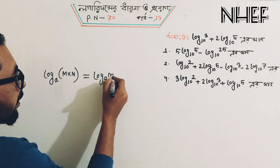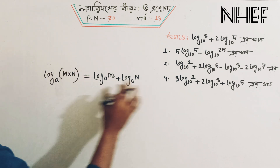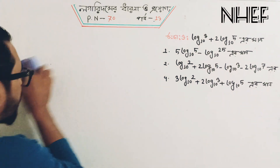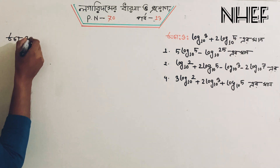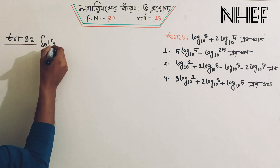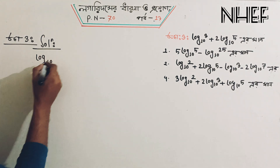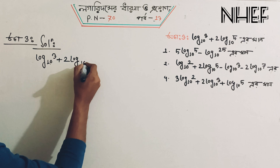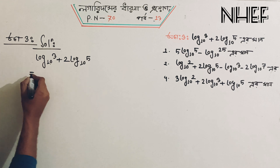Log A base M plus log A base N — that is log A base M plus log A base N. I am going to write a solution. The solution is log 10 base 3 plus 2 log 10 base 5.